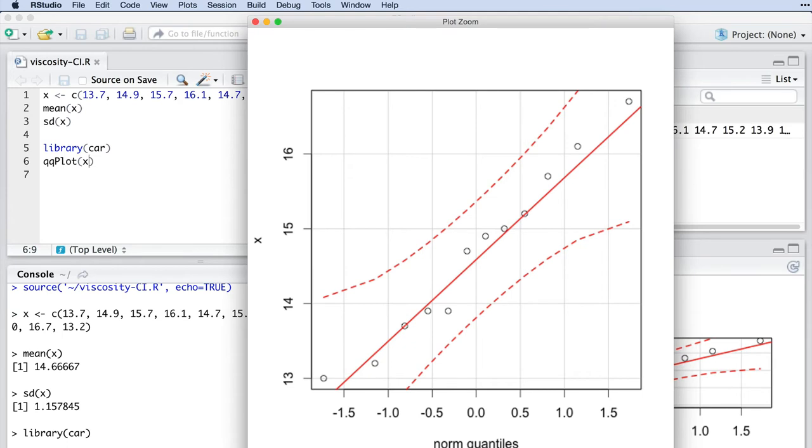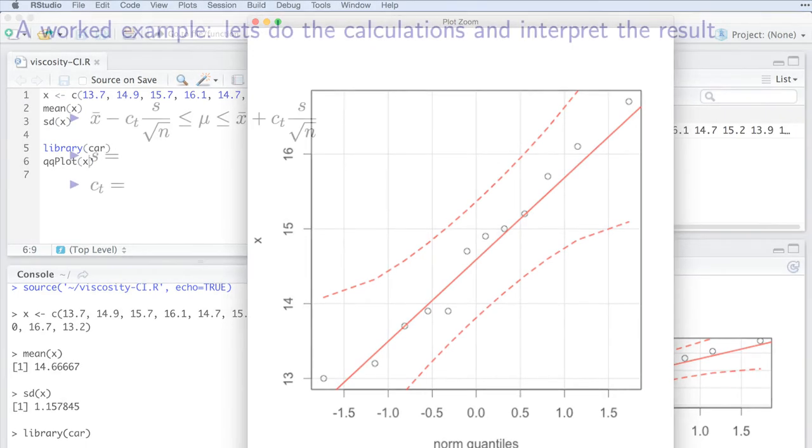Using the QQ plot, we are now sure that the data are normal. If you didn't have access to a computer to create this plot, you would simply have to state that you assume it to be true and carry on.